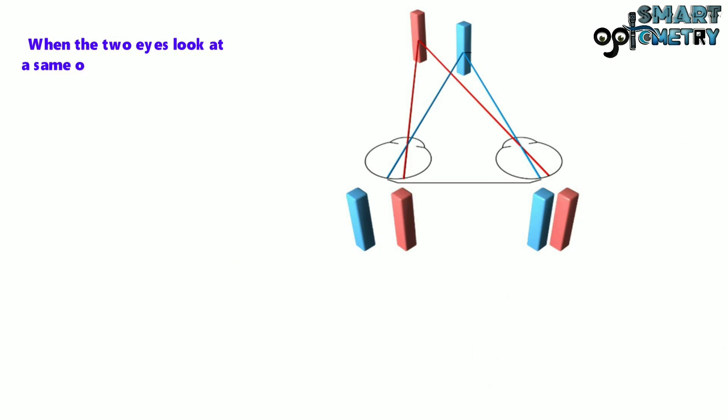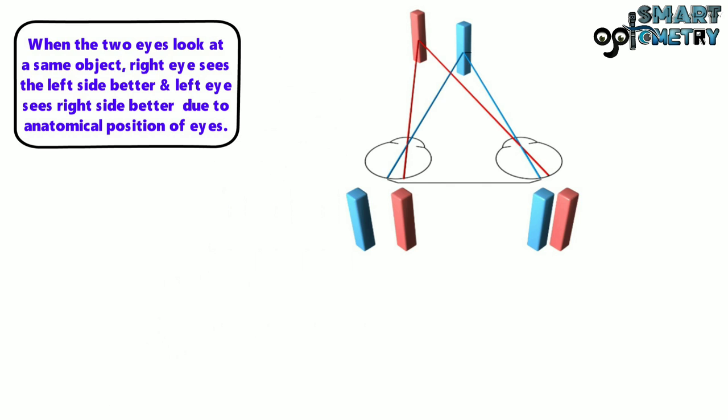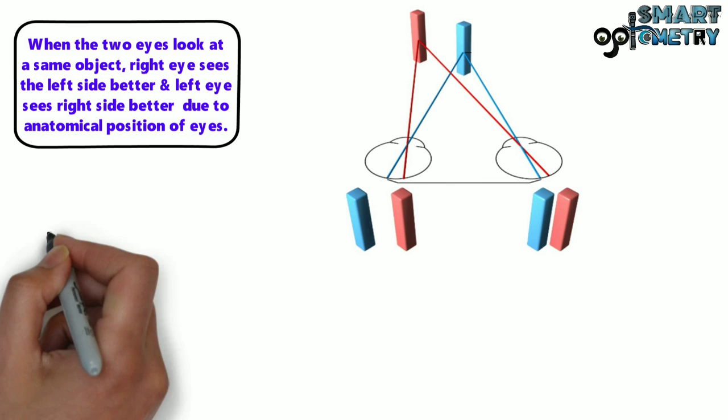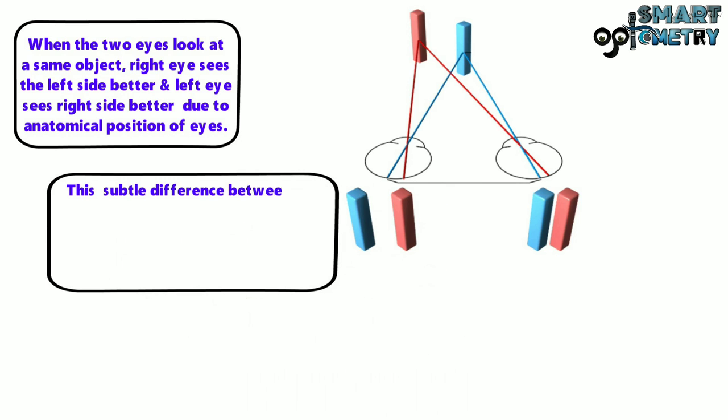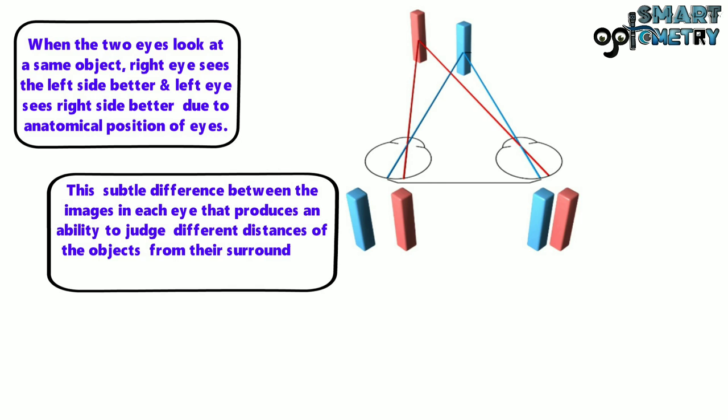When the two eyes look at the same object, the right eye sees the left side better and the left eye sees the right side better due to anatomical position of the eyes. This subtle difference between the images in each eye that produces an ability to judge different distances of the objects from their surroundings is called stereo vision or stereopsis.